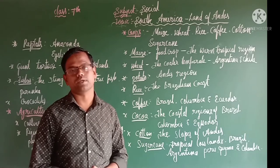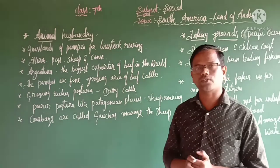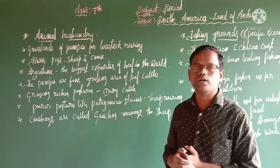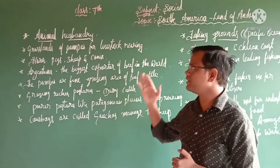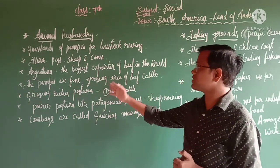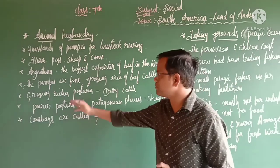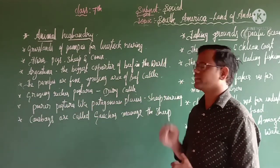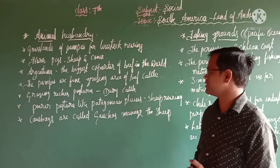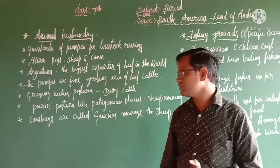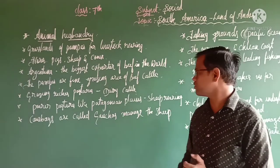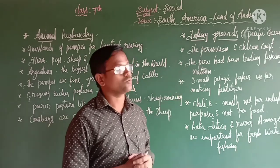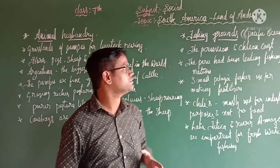Let us discuss animal husbandry of South America. The grasslands of Campos are famous for livestock rearing, including horses, pigs, sheep, and cows. Argentina was once the biggest exporter of beef in the world. The Campos provide fine grazing for beef cattle. The richest pastures are used for dairy cattle, while poorer pastures like Patagonia are used for sheep rearing. South America also has important fishing grounds in the Pacific Ocean along the Peruvian and Chilean coasts.